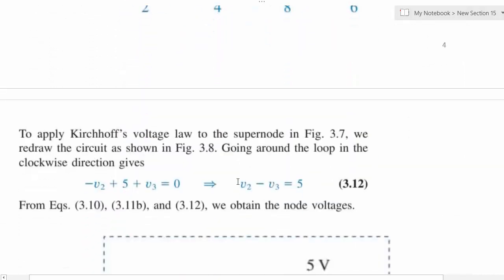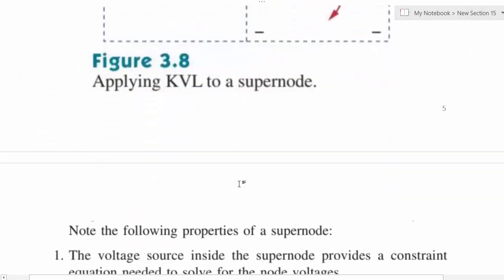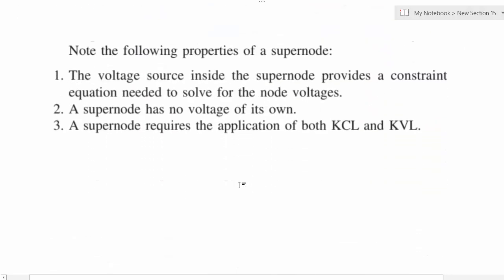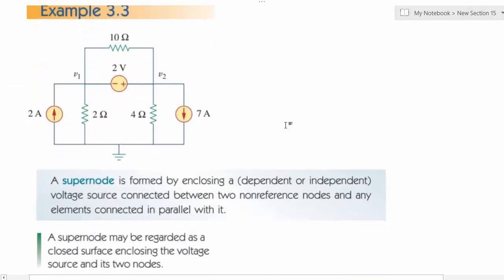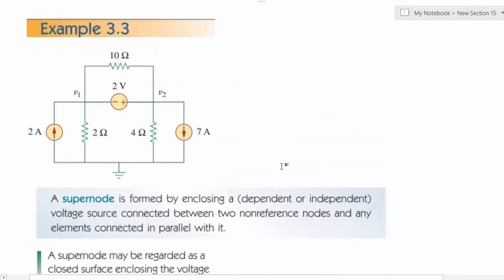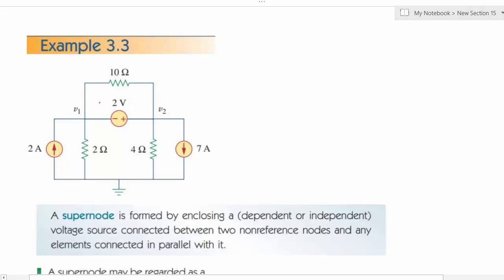To summarize the super node properties: the voltage source inside the super node provides a constraint equation. We need to solve for node voltages. The super node itself does not have its own voltage. We apply KCL to the super node boundary and KVL across the voltage source. If doing mesh analysis on this circuit, we would have four mesh currents and it becomes straightforward.